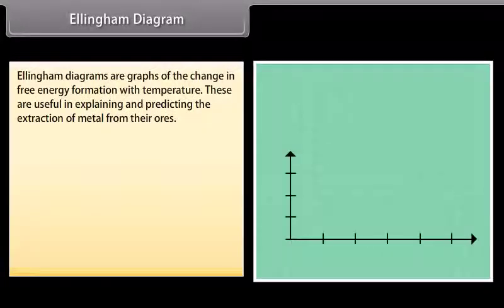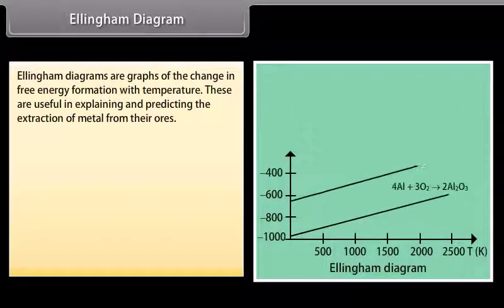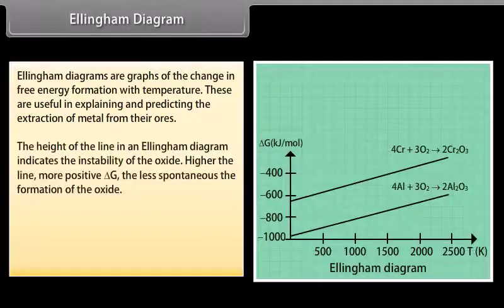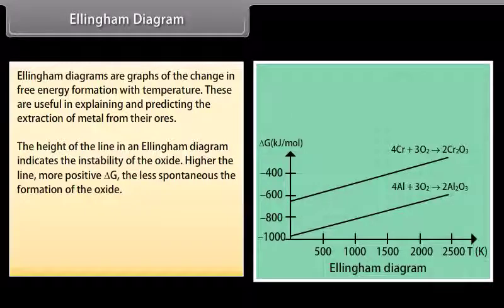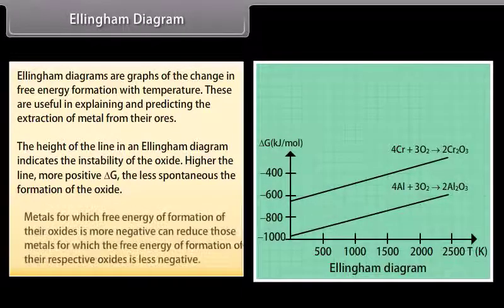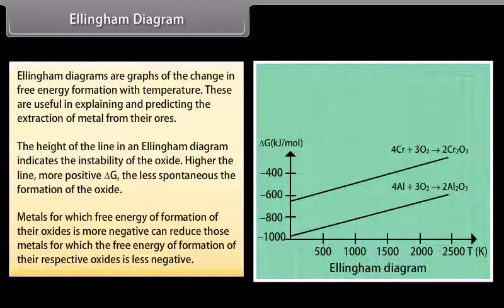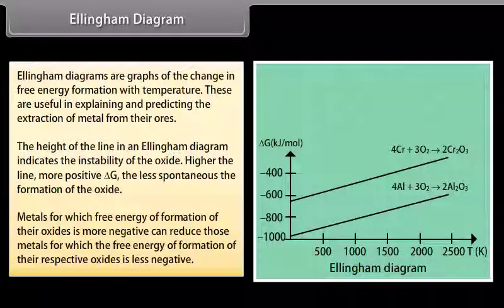Ellingham Diagram. Ellingham Diagrams are graphs of the change in free energy of formation with temperature. These are useful in explaining and predicting the extraction of metal from their ores. The height of the line in an Ellingham Diagram indicates the instability of the oxide. Higher the line, more positive ΔG, the less spontaneous the formation of the oxide. Metals for which free energy of formation of their oxides is more negative can reduce those metals for which the free energy of formation of their respective oxides is less negative.